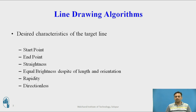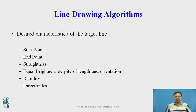It should not happen that brightness is dull or more darkened and brightened at certain points — it should be equally bright from start to end, and it should not depend on the length or orientation of the line. Next is rapidity, meaning the desired line should be drawn very fast, and it should be directionless.